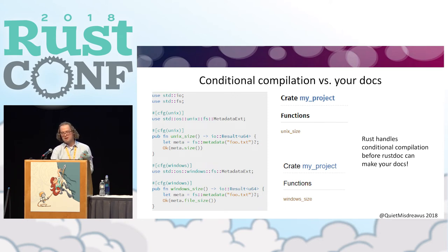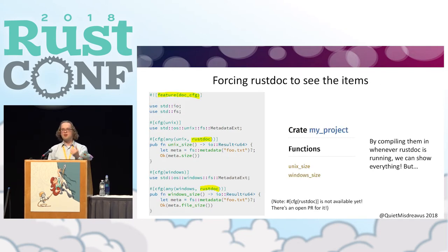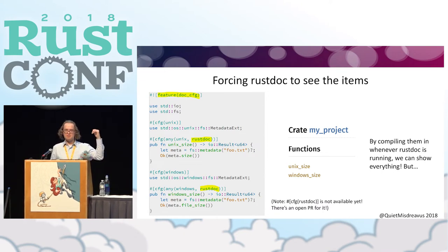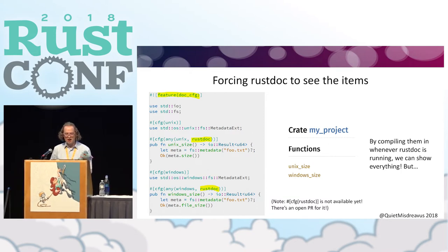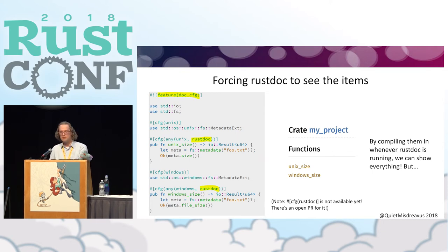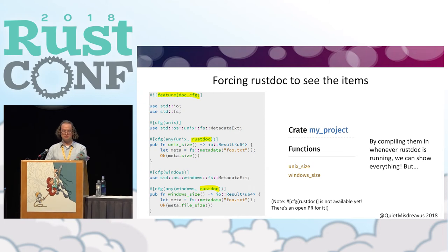To get around this, you might first think: Rustdoc doesn't need to fully compile the code — it doesn't need to link against platform libraries or translate code to machine code. So let's just make everything available to Rustdoc whenever it's running. There's cfg(rustdoc) for this — there's an open PR to make it so that when Rustdoc is running, that flag is set. Right now the suggested way is to use a Cargo feature, typing cargo doc --features docs, and using that as your conditional compilation. You tell the compiler: this thing is available both on Unix and whenever I'm building docs, or on Windows and whenever I'm building docs. If you're just building your docs, you get both.